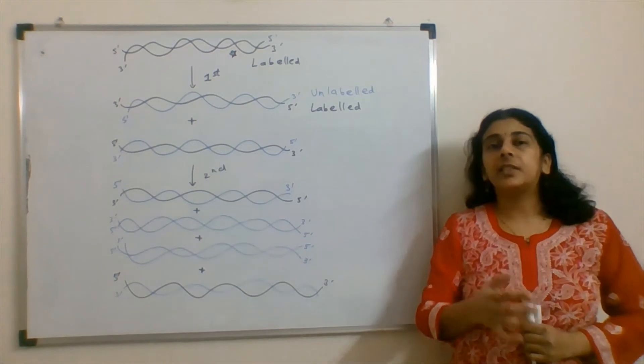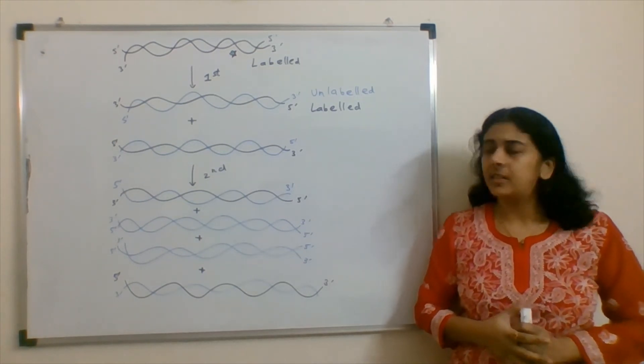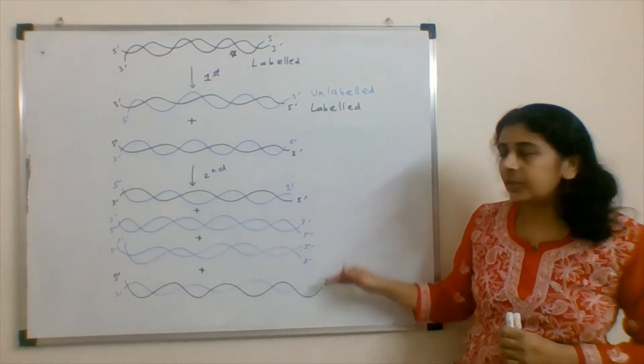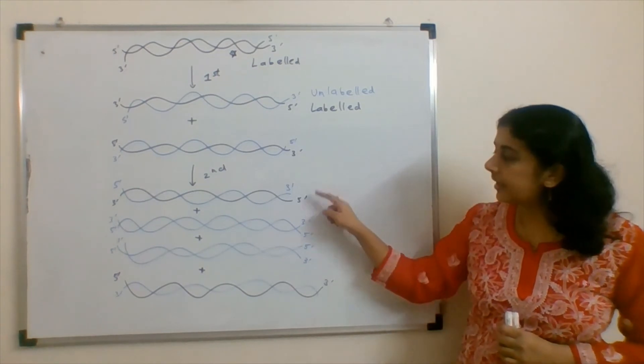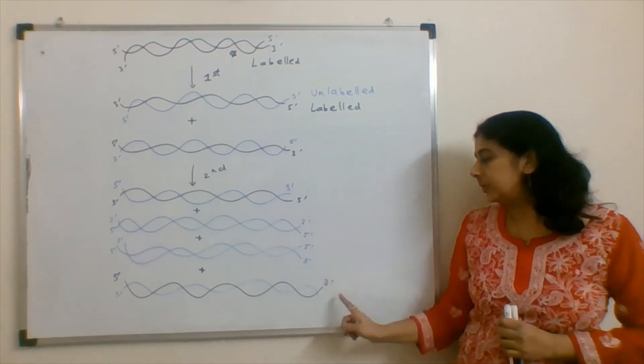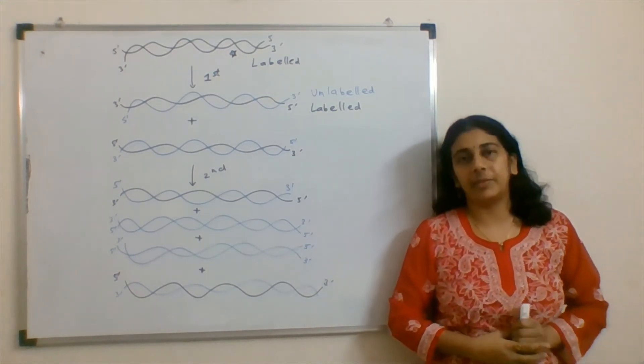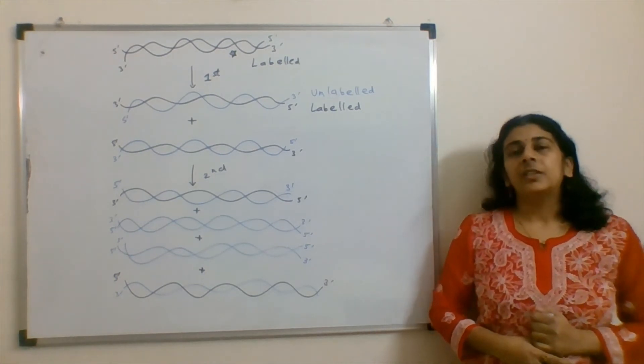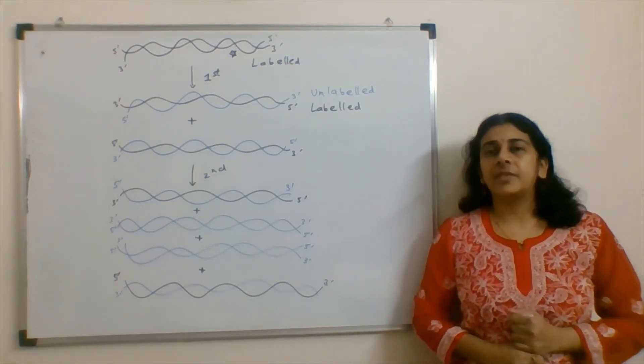And in our question, three duplication cycles are given. Even if we duplicate this again, again there would be two strands which are labelled.